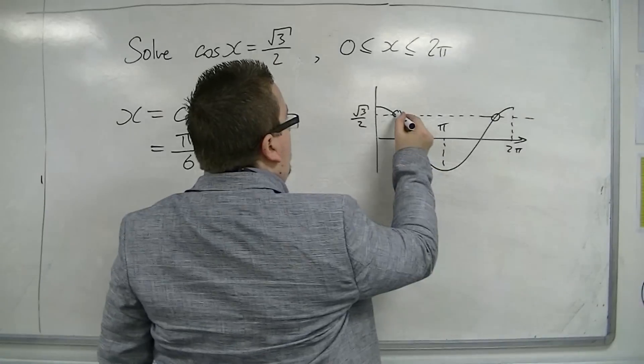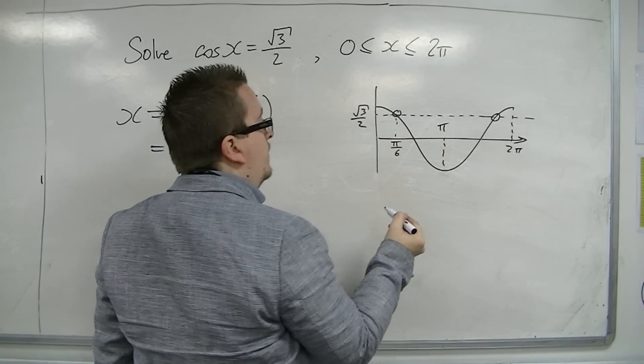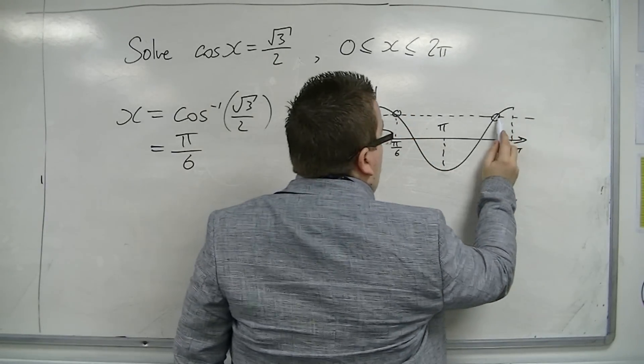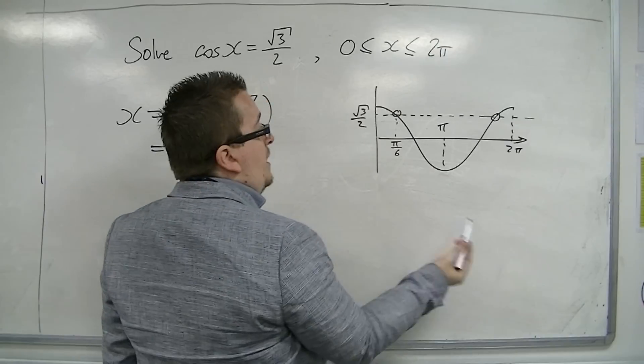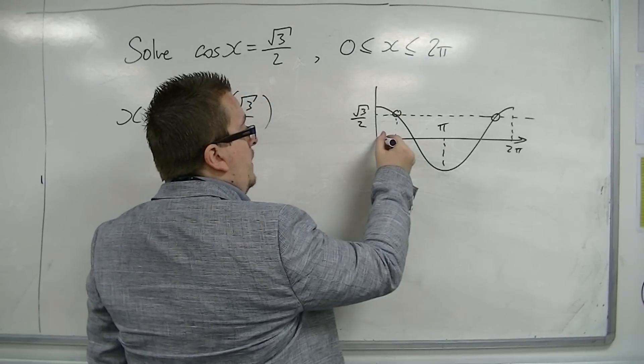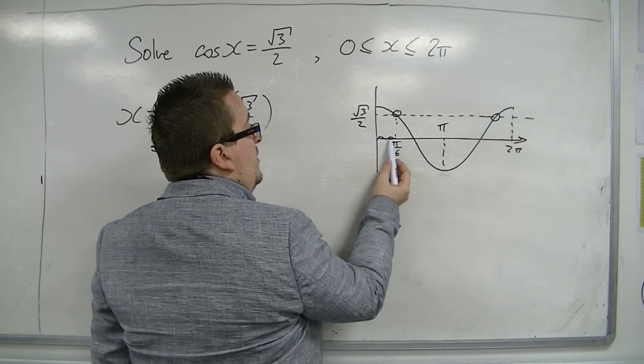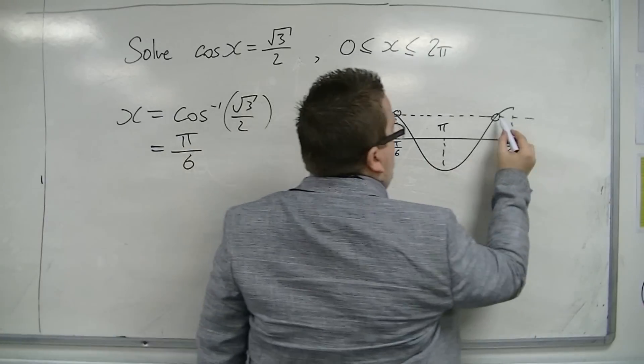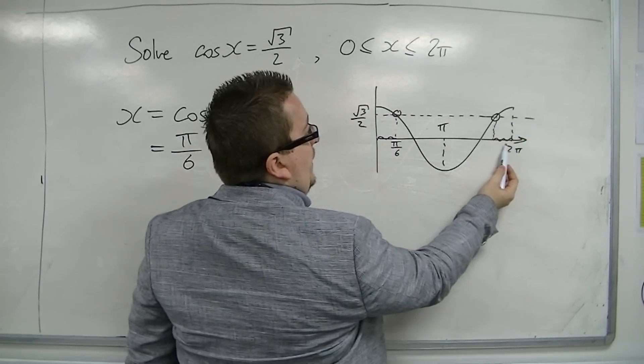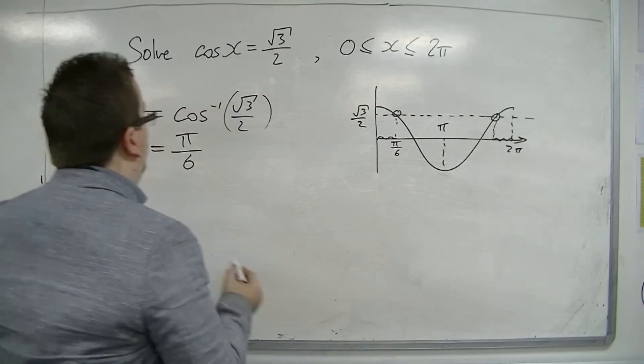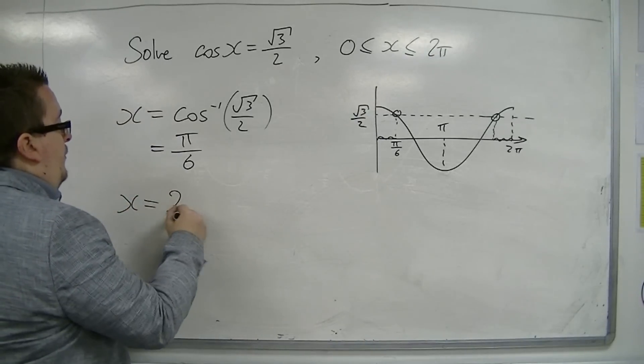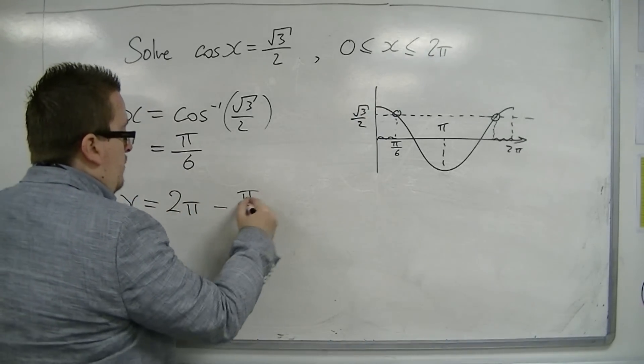So, this value is your π over 6, and this value can be found by using the symmetry of the curve. So, if that distance is π over 6, then this distance must be π over 6. And so, you can find the other solution by subtracting π over 6 from 2π.